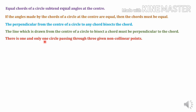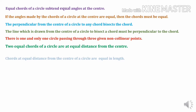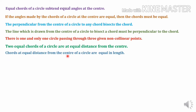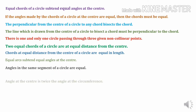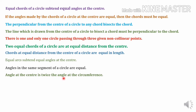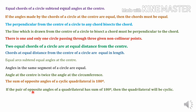There is one and only one circle passing through three given non-collinear points. Two equal chords of a circle are at equal distance from the center. Chords at equal distance from the center of a circle are equal in length. Equal arcs subtend equal angles at the center. Angles in the same segment of a circle are equal. Angle at the center is twice the angle at the circumference. The sum of the opposite angles of a cyclic quadrilateral is 180 degrees. If the pair of opposite angles of a quadrilateral has a sum of 180 degrees, then the quadrilateral will be cyclic.